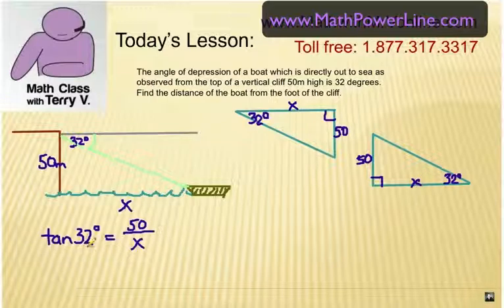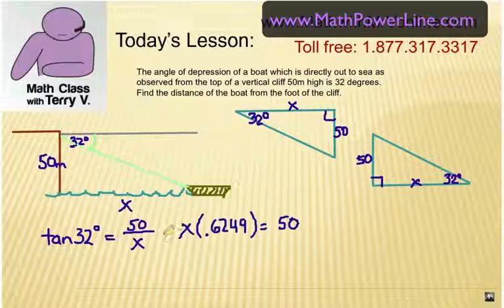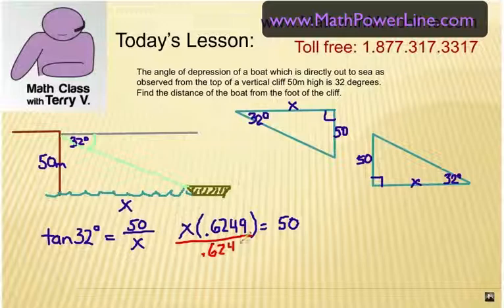So the tangent of 32 degrees equals the opposite leg, 50, over the adjacent leg, X. We're going to solve for X. One way to do this is to cross-multiply tangent 32 degrees times X, which tangent there is 0.6249 if you do that on your calculator, equals 50. We're going to divide each side by 0.6249, and that will give us our answer, 50 divided by 0.6249.